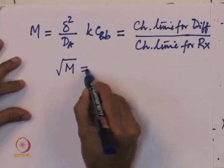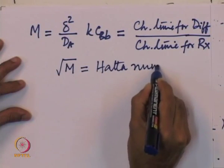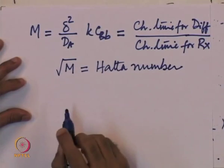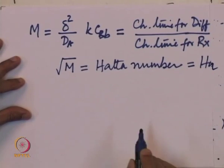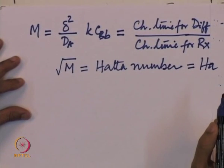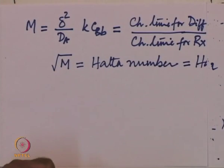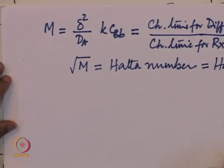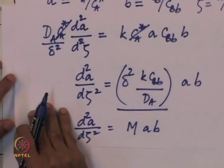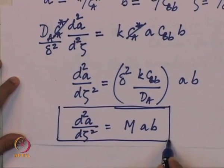In the literature, the square root of M has come to be called the Hatta number, sometimes referred to as Ha in some books. We shall use the nomenclature M, because much of the literature continues to use that kind of nomenclature. We have now got the non-dimensional form of the diffusion equation for A.